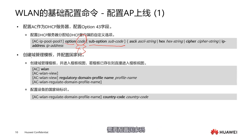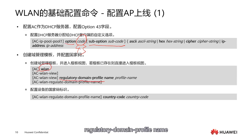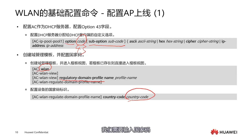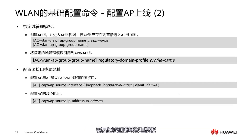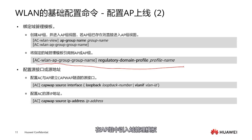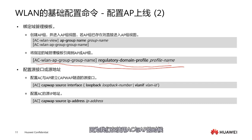We also need to establish a domain management template and configure the country code. First, enter the WLAN protocol view, then use the keyword 'regulatory domain profile name' to create our domain management template. We need to enter the country code — China's country code is CN. After having the domain management template, we need to create an AP group to manage many APs uniformly. After creating the AP group, we bind our regulatory domain profile with the AP group by importing the regulatory domain profile within the AP group.